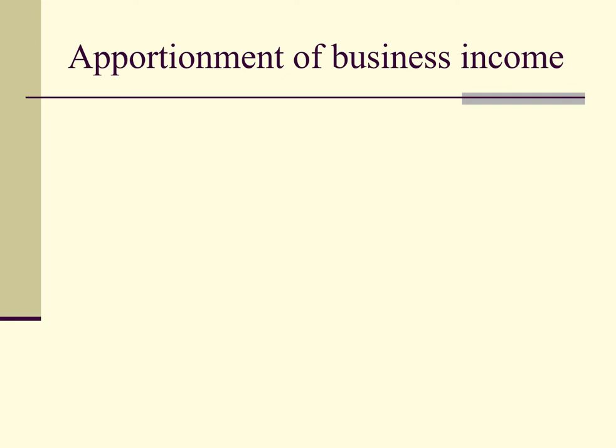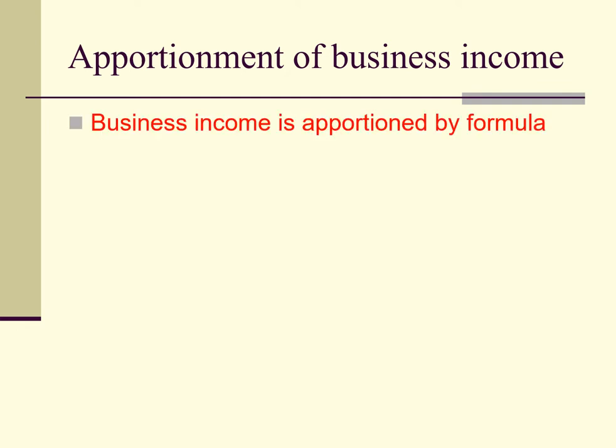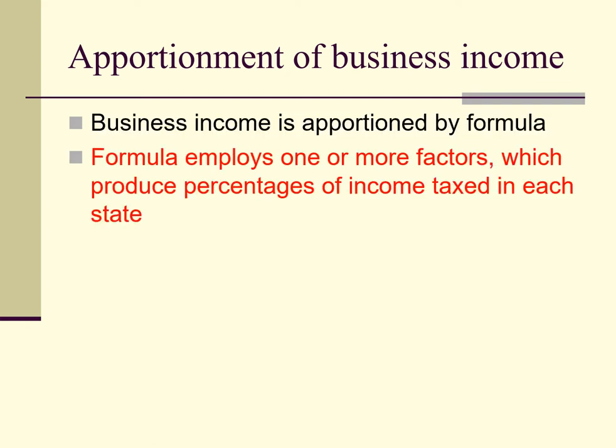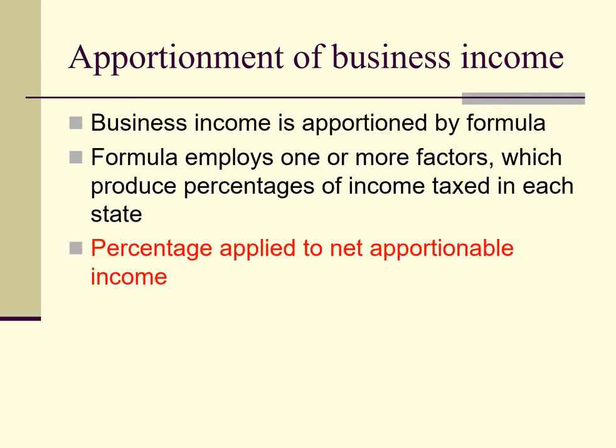Now let's look at the apportionment of business income, which is the main focus of this lecture. Business income, which generally means income derived from active business operations, is apportioned by formula when the income is earned in more than one state. The apportionment formula is derived from one or more factors, which result in percentages of income being taxed in each state in which the company has state income tax nexus. The percentage derived by formula is applied to the net apportionable income of the business and is not applied to allocable income.